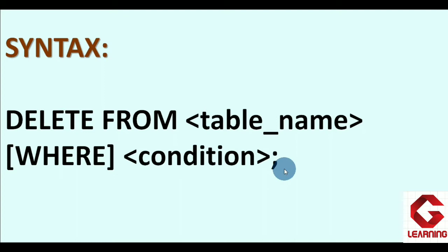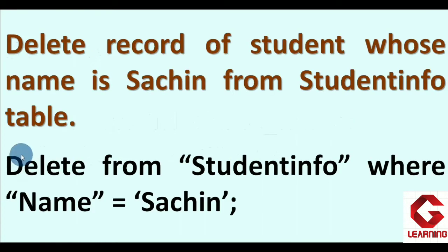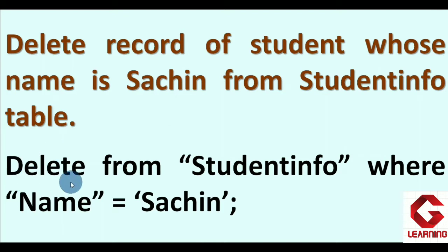To explain the DELETE command practically, here is a situation: delete the record of the student whose name is Sachin from the student_info table. The DELETE command for this is: DELETE FROM "student_info" WHERE name = 'Sachin'; This command will delete the record of the student named Sachin from the student_info table.